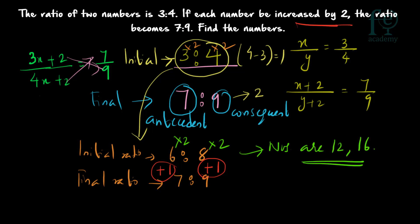To convert the initial ratio to the final ratio, the difference is just 1: 6 plus 1 equals 7 and 8 plus 1 equals 9. This 1 is equivalent to 2 in the question, since each number is increased by 2 to get the final ratio 7 is to 9. So you multiply 6 into 2 and 8 into 2 to get the actual numbers. We will see more examples to be thorough with this method.